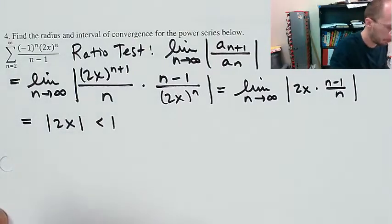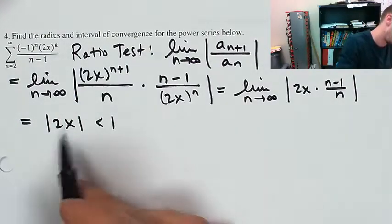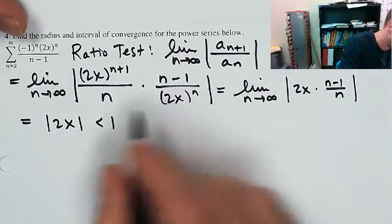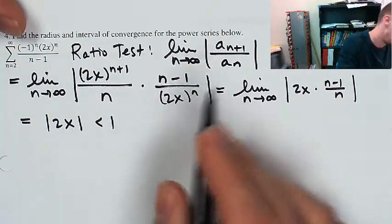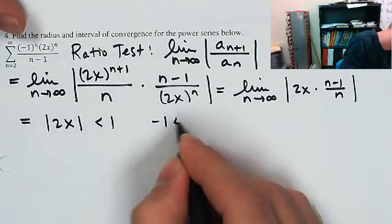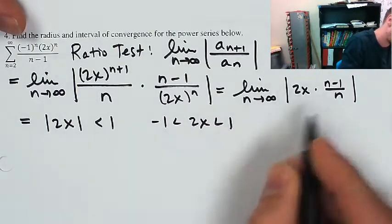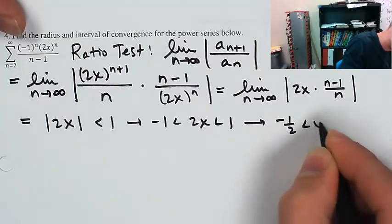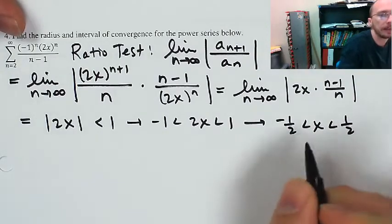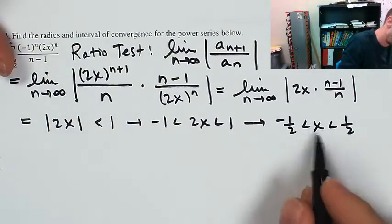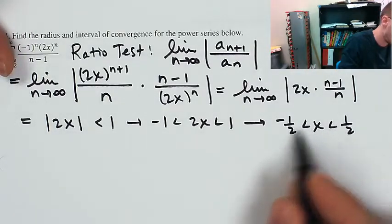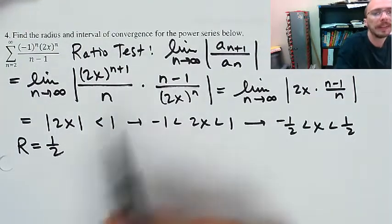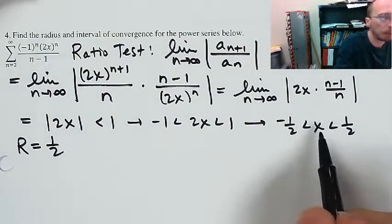As n approaches infinity, the fraction n minus 1 over n approaches 1, so I'm just left with the absolute value of 2x, which needs to be less than 1. That's 2x being between negative 1 and 1. I'll divide all three sides by 2, and that's the interior of my interval. The radius is equal to one half because it goes a half in each direction. So radius equals one half. But to get the full-blown interval, I need to check the endpoints.